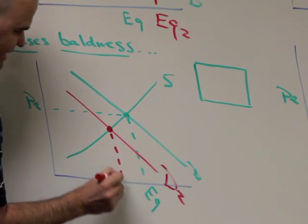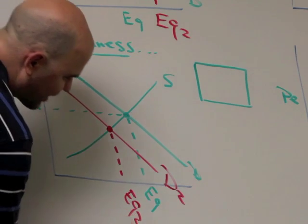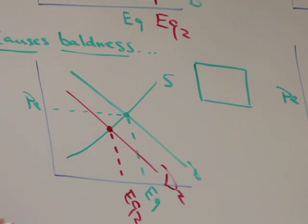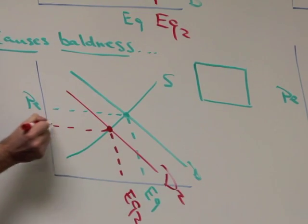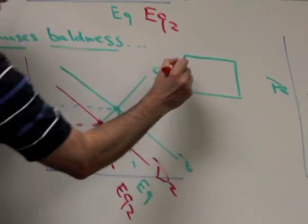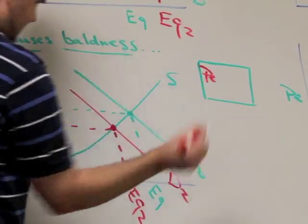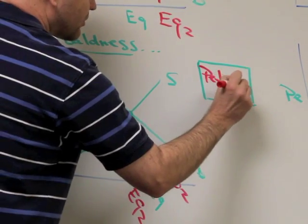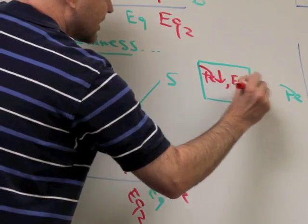New equilibrium point, tracing down, we get our new equilibrium quantity, which clearly has decreased because it's moved back towards zero. A new price equilibrium, PE2, which has also gone down. So in this box, I'm going to say price equilibrium has gone down, equilibrium quantity has also gone down.